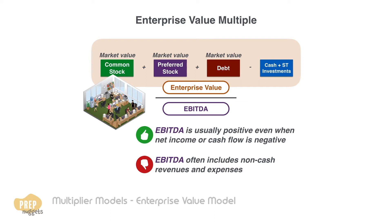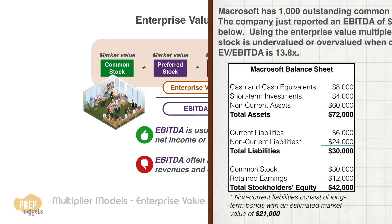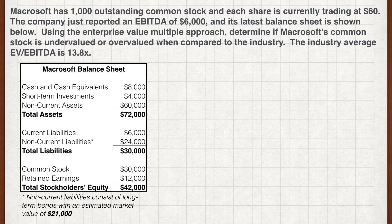So now that we've understood both the numerator and denominator of the enterprise value multiple, let's learn how to apply this method through an example. Macrosoft has 1,000 outstanding common stocks and each share is currently trading at $60. The company just reported an EBITDA of $60,000 and its latest balance sheet is shown below. Using the enterprise value multiple approach, determine if Macrosoft's common stock is undervalued or overvalued when compared to the industry. The industry average EV over EBITDA is 13.8 times.